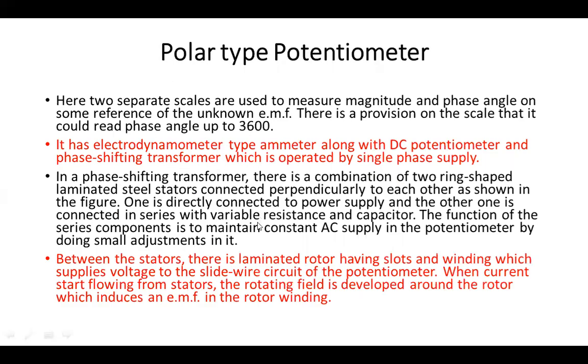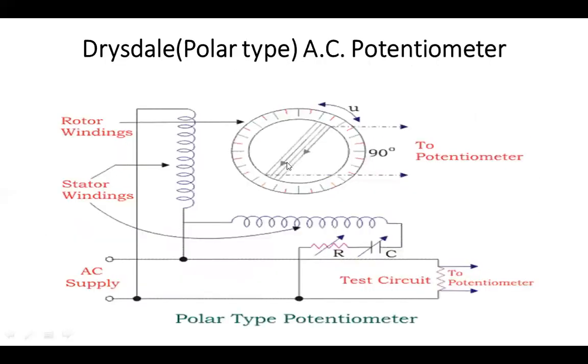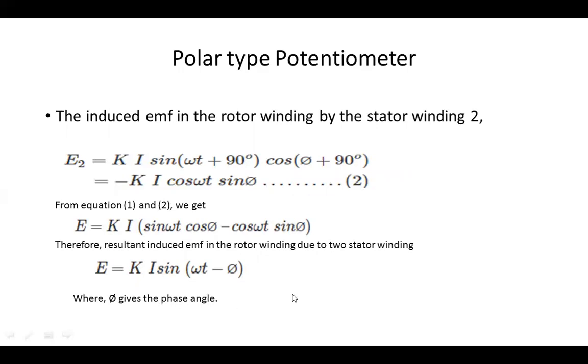From the equation number 1 and 2, that is from this equation and from this equation we can come in the conclusion that E equals to K into I sin omega t cos phi minus cos omega t sin phi. Therefore, the resultant induced EMF in the rotor winding due to two stator winding is E equals to K I sin omega t minus phi where phi gives the phase angle. So, from the scale that is on the top of the instrument, you can directly read the magnitude and from this equation you will get the value of the phase angle. So, in this way, the Drysdale type potentiometer works.